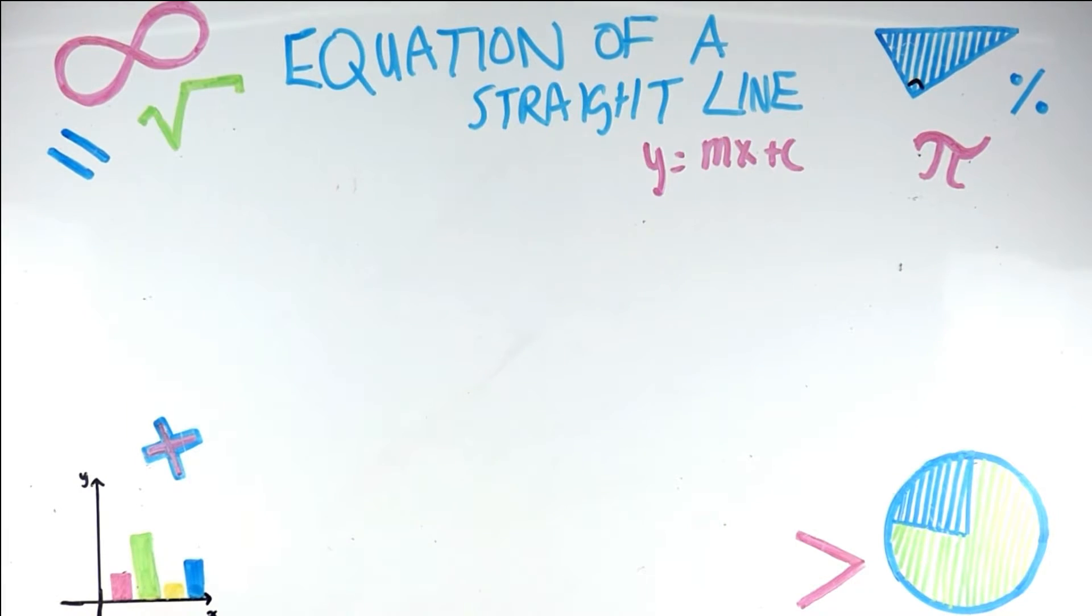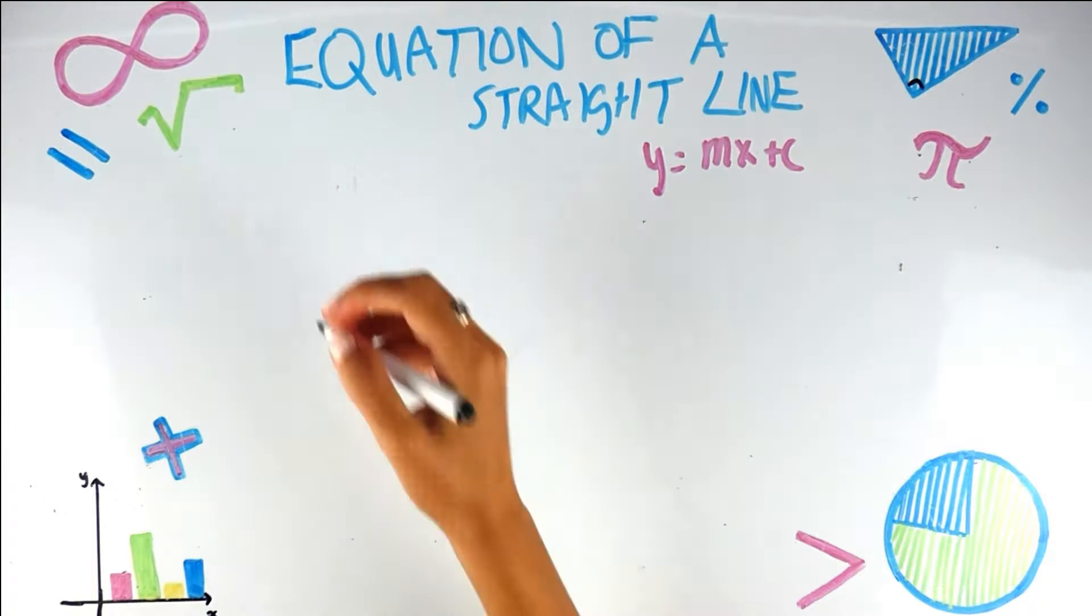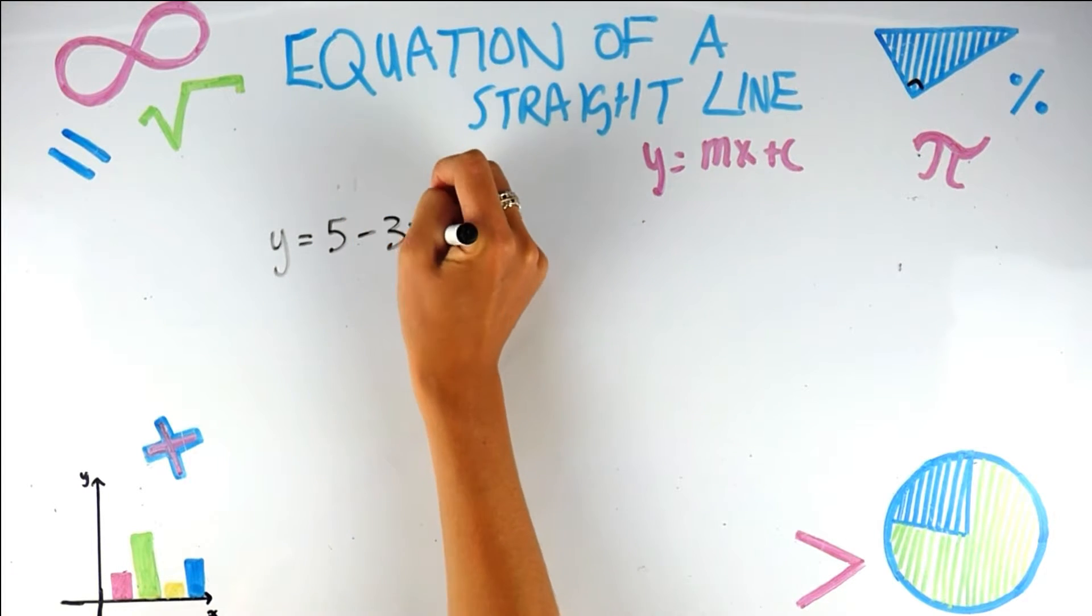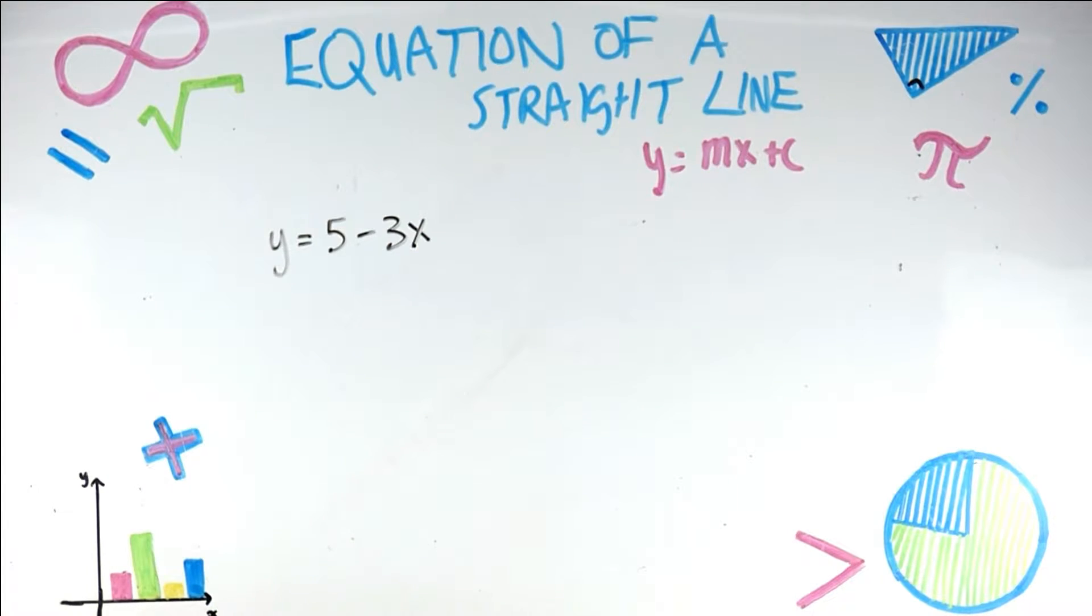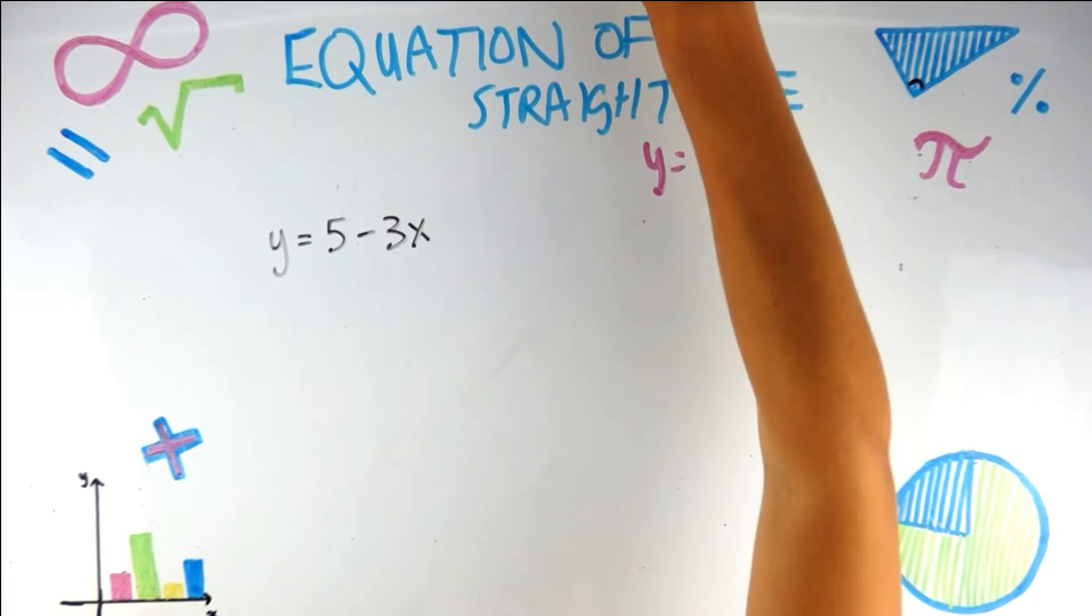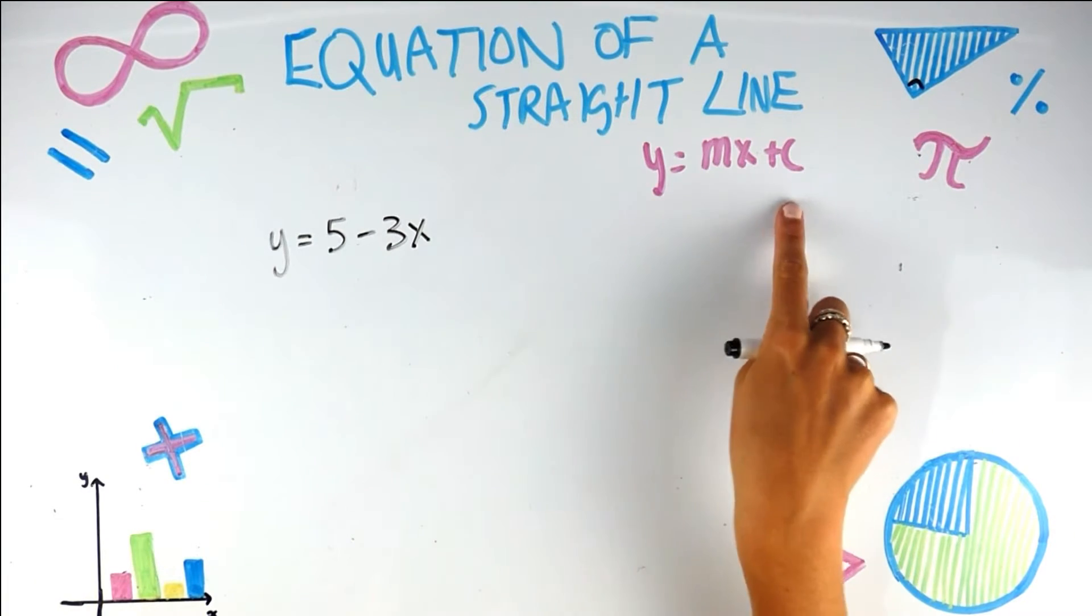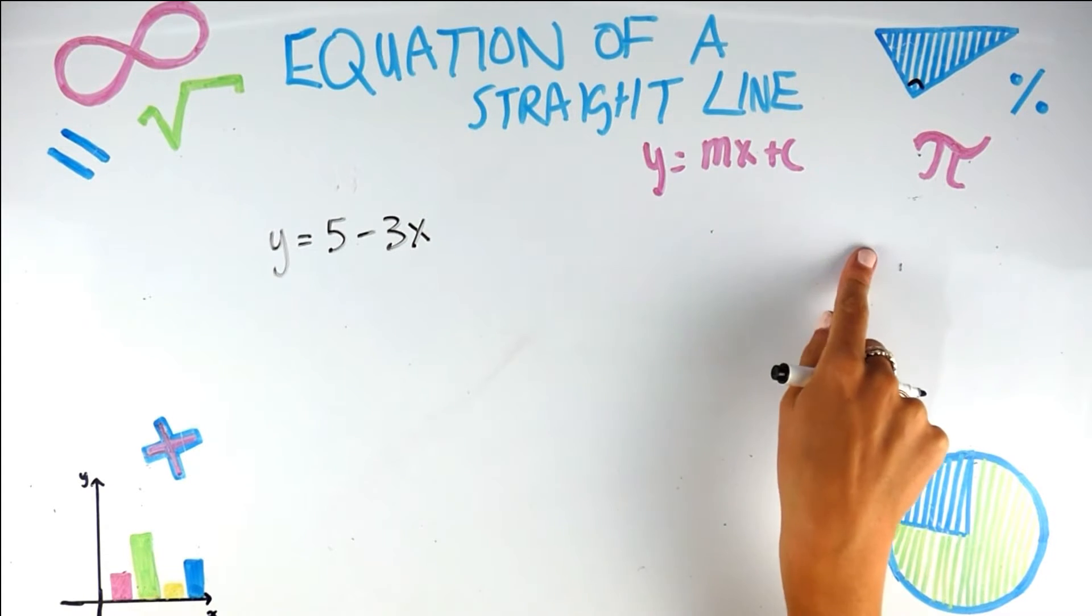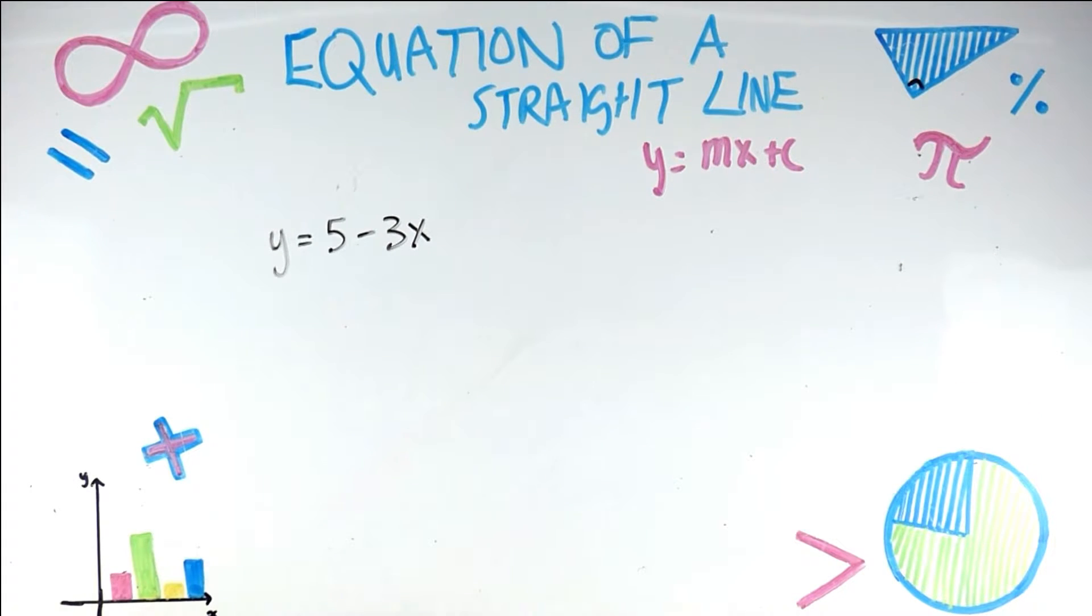These are exam style questions. So, for example, this one would be about two marks. So it says a straight line has the equation y equals 5 minus 3x. One important thing to note as well, which will come up in one of these examples, is it's very important to have it in this form. So you want y by itself. It has to be y equals something. But that will make more sense if I show you an example. It says write down the gradient of this line.